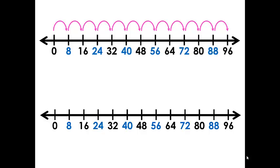Here we have a number line with the multiples of 8. We're going to make 4 hoops, so we're going to say 4 times 8 equals 32.